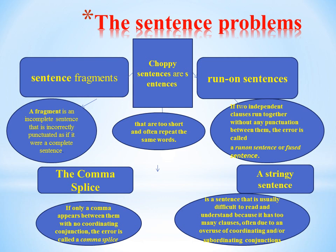Choppy sentences are sentences that are too short and often repeat the same words. Run-on sentences occur when two independent clauses run together without any punctuation between them — this error is called a run-on or fused sentence. The comma splice occurs when only a comma appears between two independent clauses with no coordinating conjunction. A stringy sentence is usually difficult to read and understand because it has too many clauses, often due to an overuse of coordinating and/or subordinating conjunctions. A sentence must have a subject and a verb; a phrase can lack both, but a complete sentence needs both.